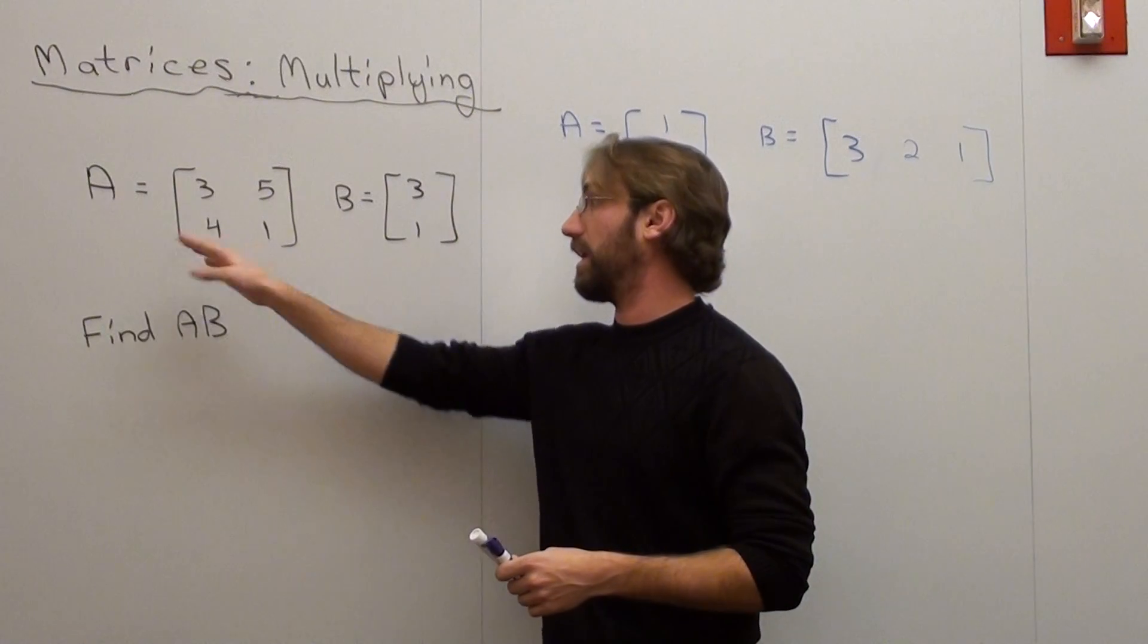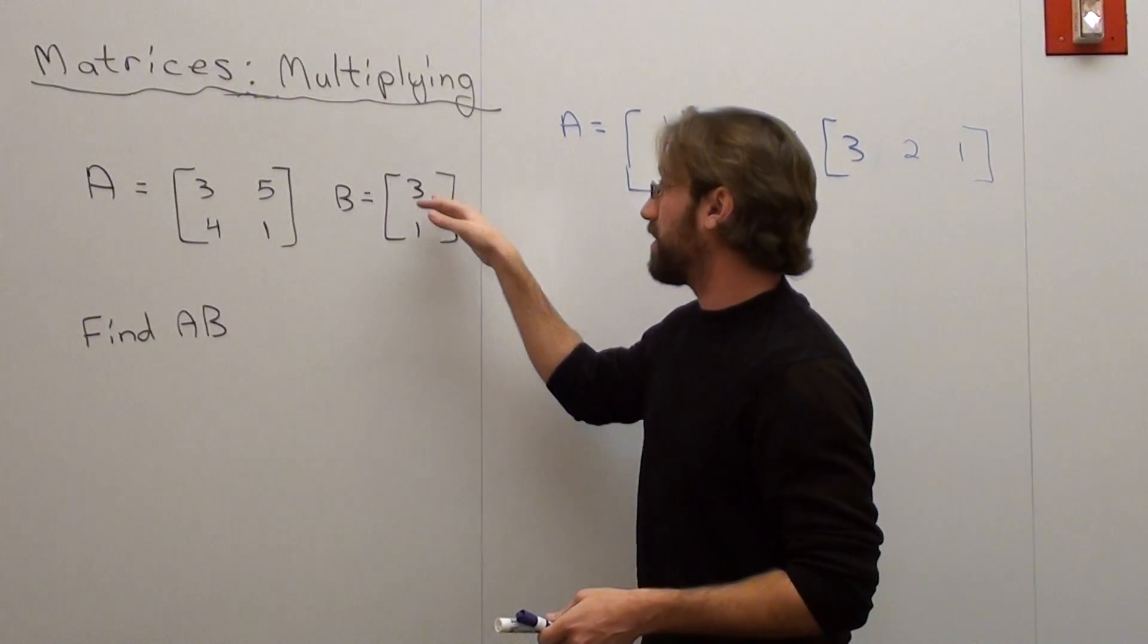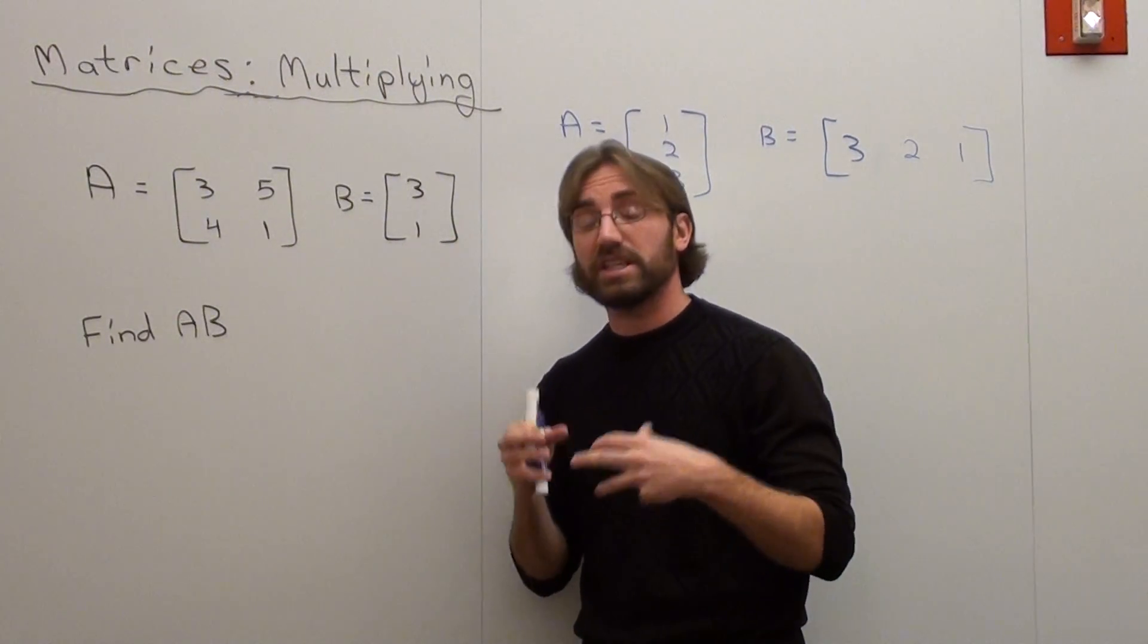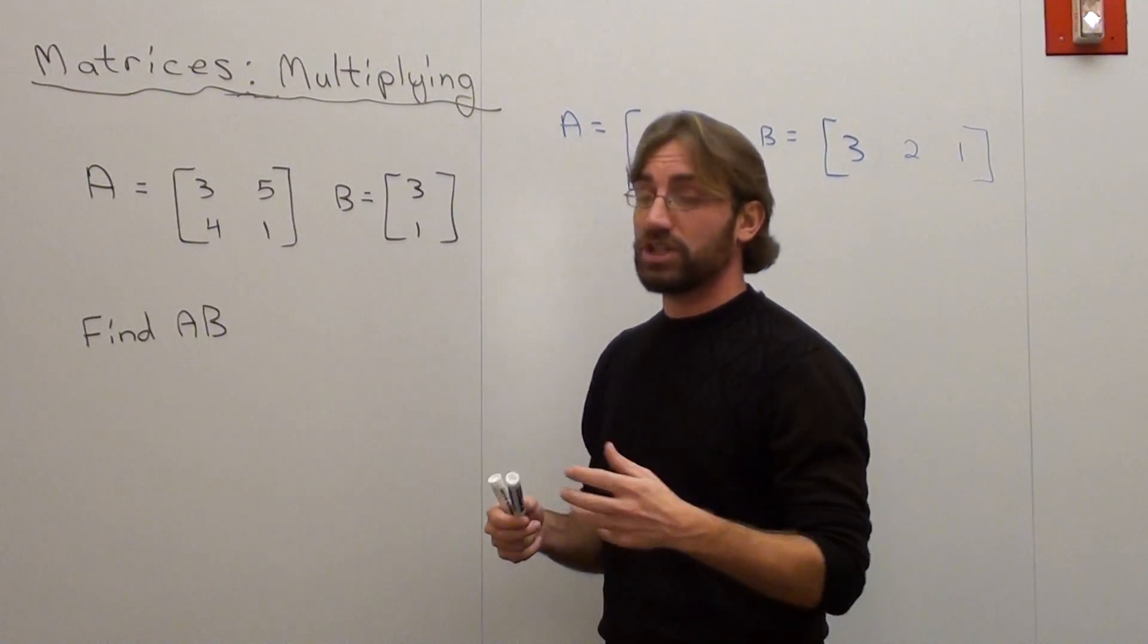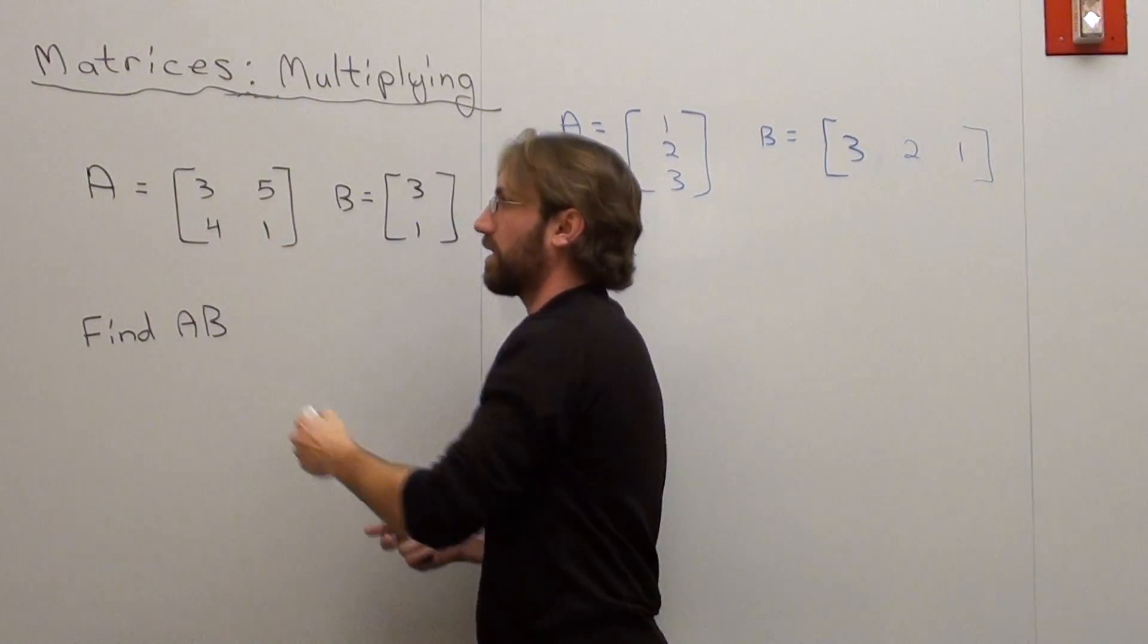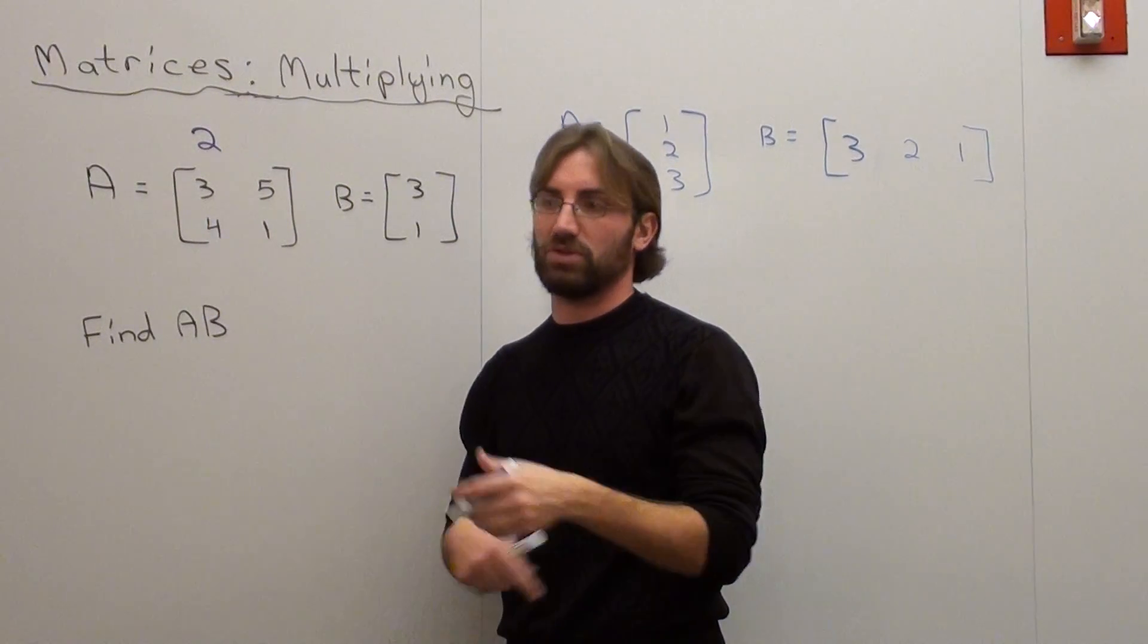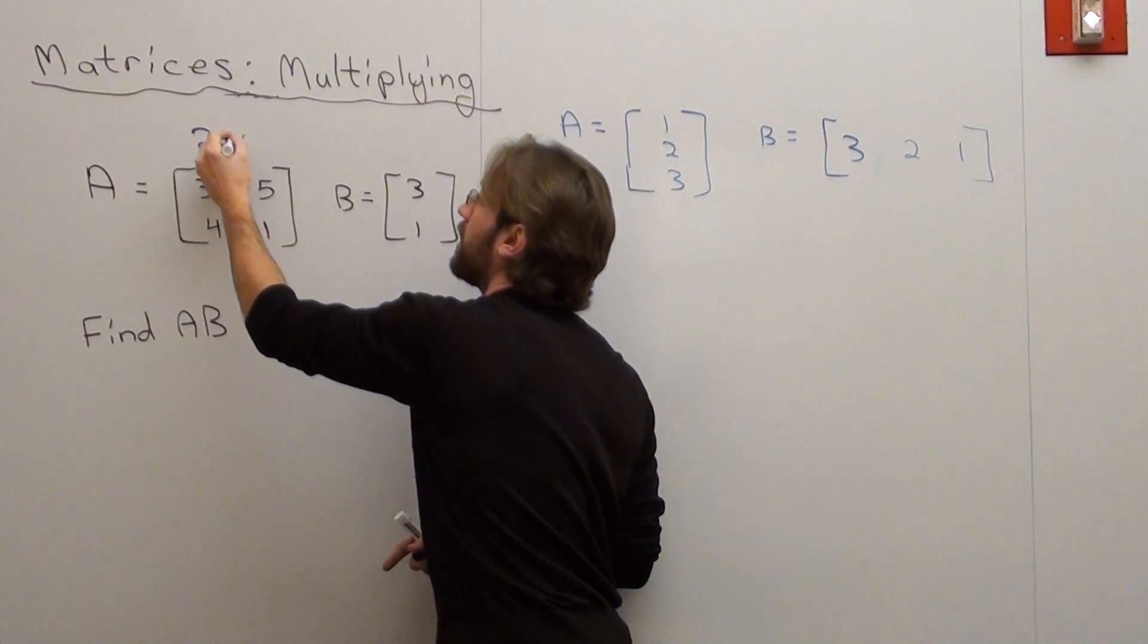I've got two matrices right here. Matrix A is 3, 5, 4, 1, and matrix B is 3, 1. The first thing you do when multiplying matrices is figure out the dimensions - the rows and columns. This one has two rows and two columns. Columns go up and down, that's how I remember it. Rows go side to side. You always do rows first. So this is a 2 by 2 matrix.